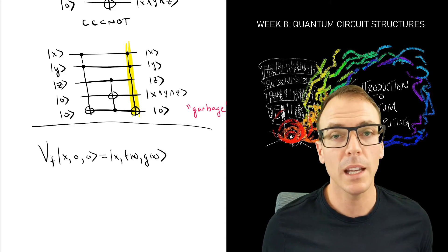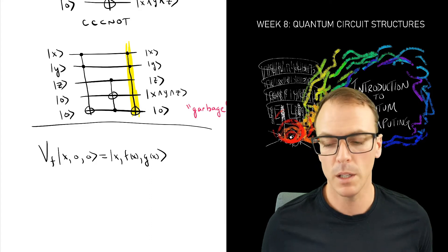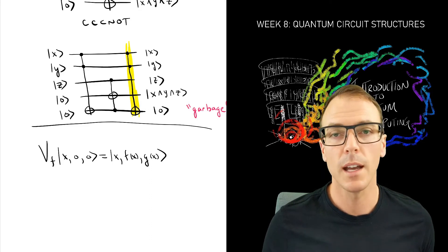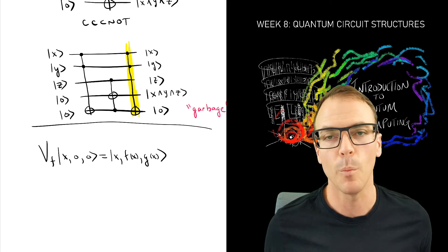So we can't simply invert V now, because that would take us back to the original state, the x, 0, 0 state, and the value of the function has not been applied.